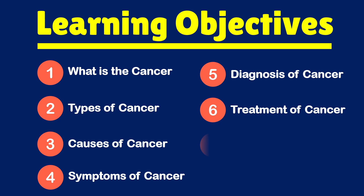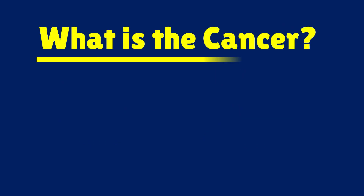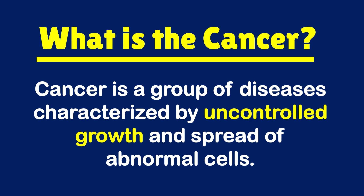Treatment of cancer and prevention of cancer. So first of all, what is cancer? Cancer is a condition, or you can say a group of diseases, in which normal cells lose control over their growth, so they grow indefinitely. Simply put, the uncontrolled growth of normal cells is called cancer.